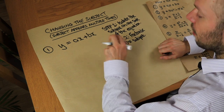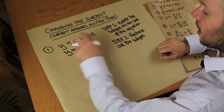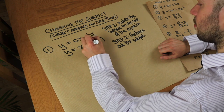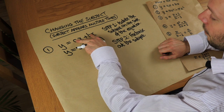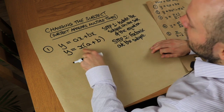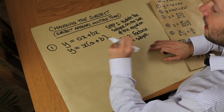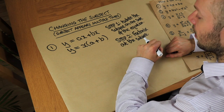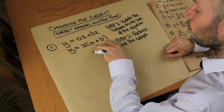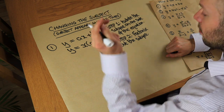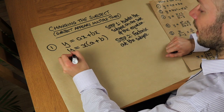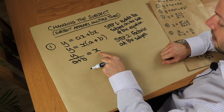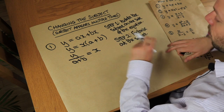So factorizing out x here, we write y equals x brackets, where x times a gives ax and x times b gives plus b. Now the subject x only appears once, so it's just like a problem from the previous video where the subject only appeared once. x is being multiplied by all of (a plus b), so to undo that we divide both sides by (a plus b), giving y over (a plus b) equals x. x is now on its own on one side of the equation only, so we have completed the question.